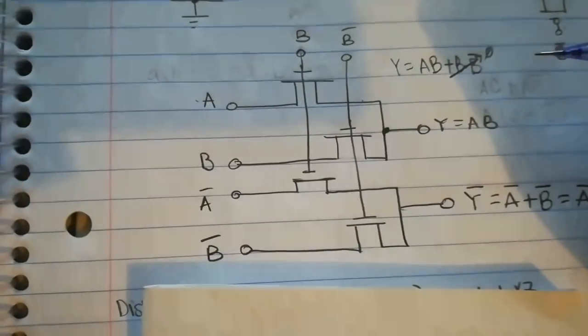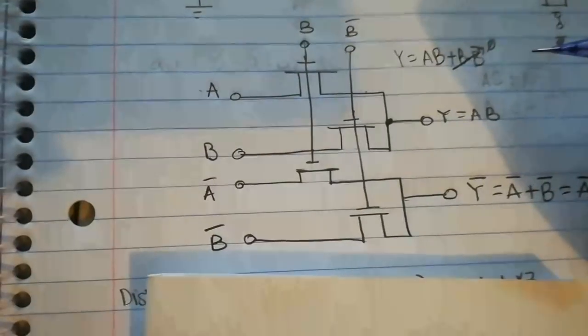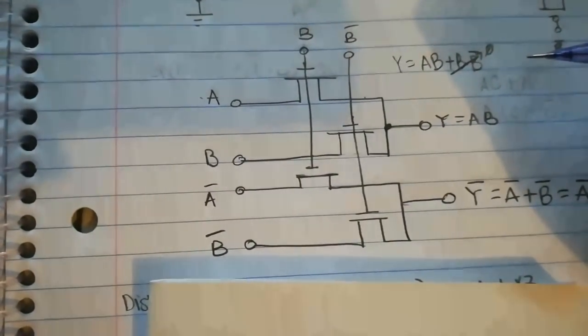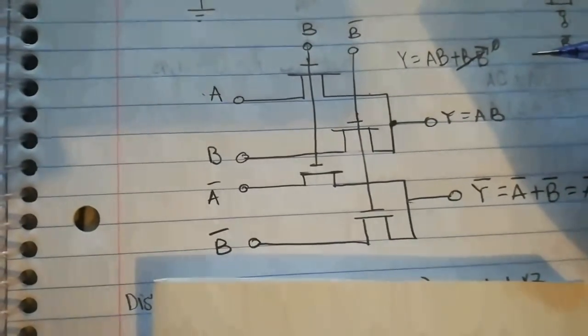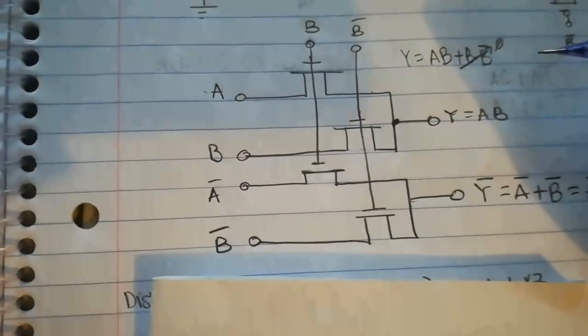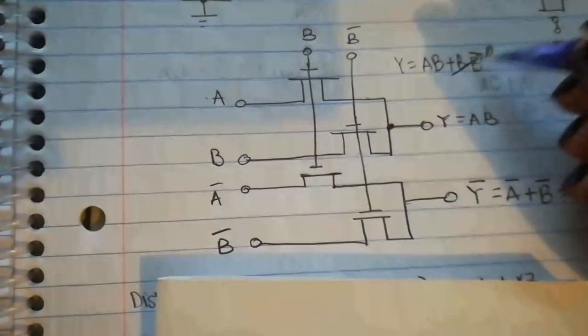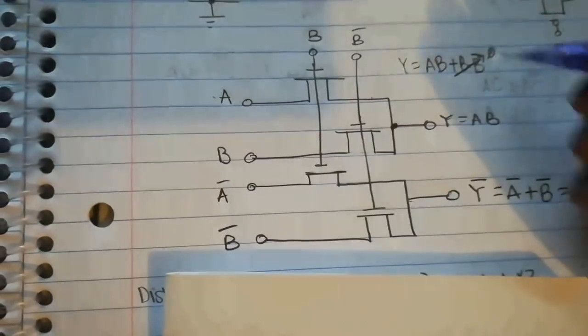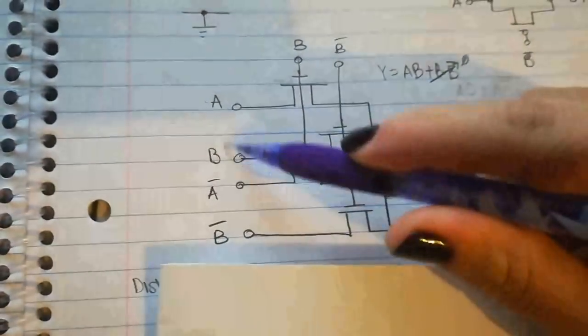I think it is property number seven on the cheat sheet. It says that when you have something and that something bar, that goes away to zero. So that's why you get Y equals AB from all of this.